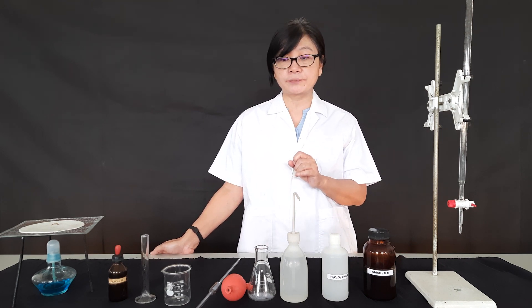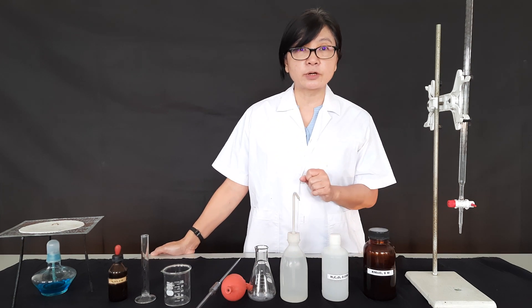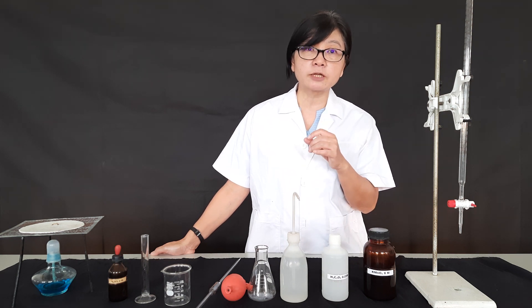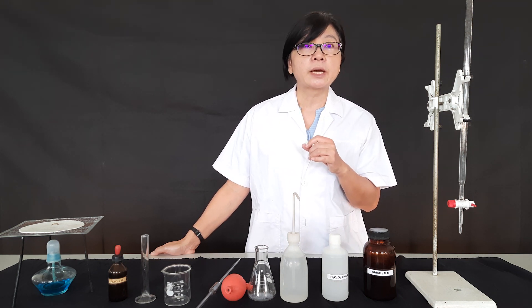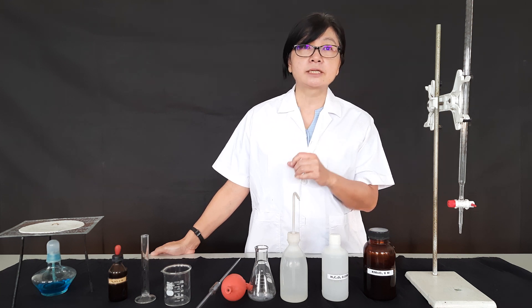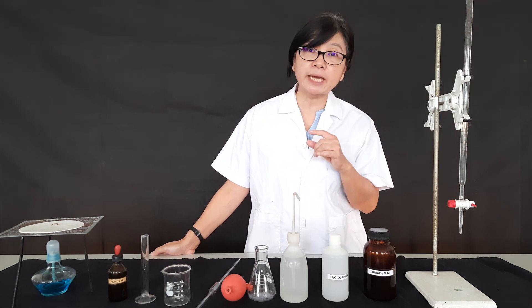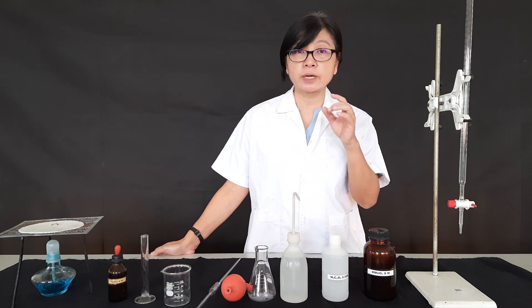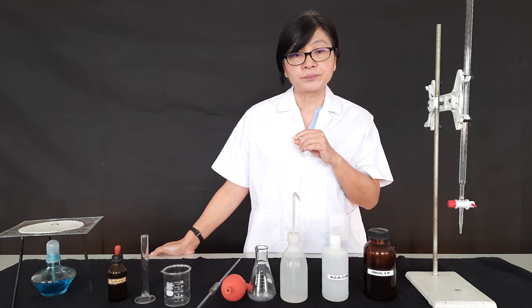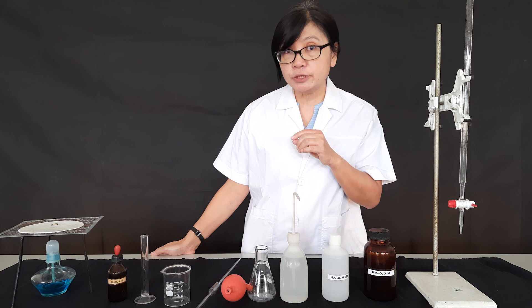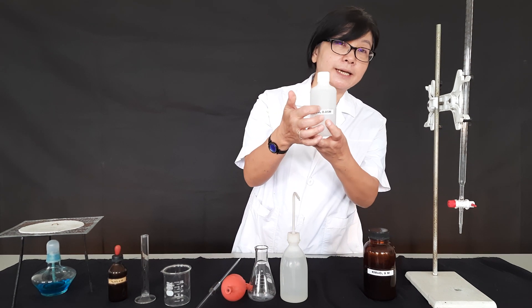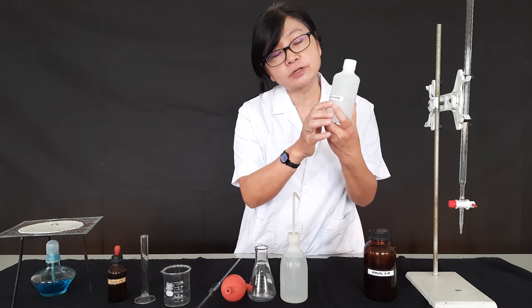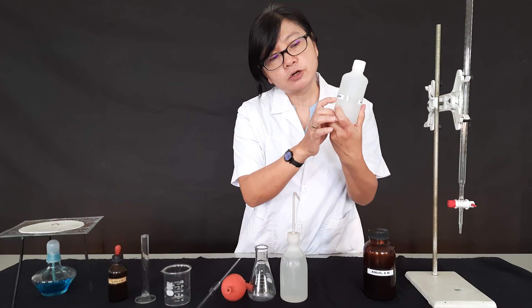The name of this titration method is permanganometry, because we use the standard solution — the solution of known concentration — which is potassium permanganate, KMnO₄. That is a strong oxidizing agent. The reducing agent we use is oxalic acid, H₂C₂O₄, with a known concentration of 0.05 molar.